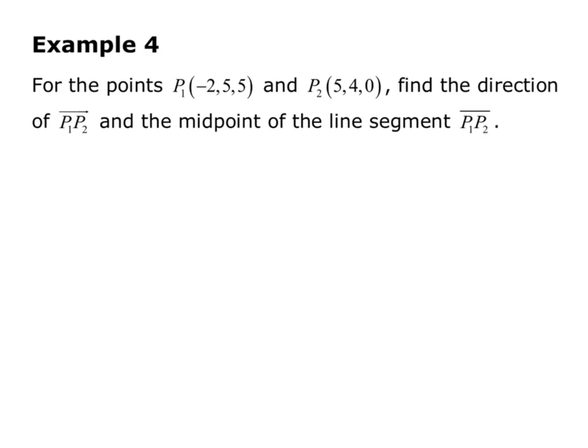So we'll start by finding the direction vector, and we explained how to do this in video 2. Remember, direction vector means the unit vector. First we want to find the vector P1 P2. So we do terminal point minus initial point, x2 minus x1, y2 minus y1, and z2 minus z1.